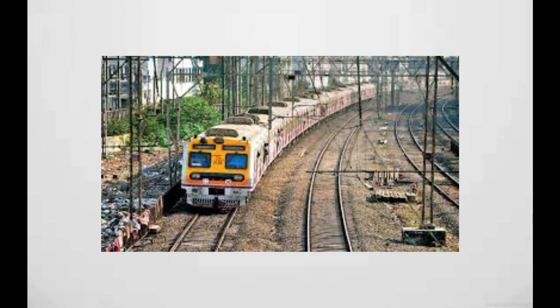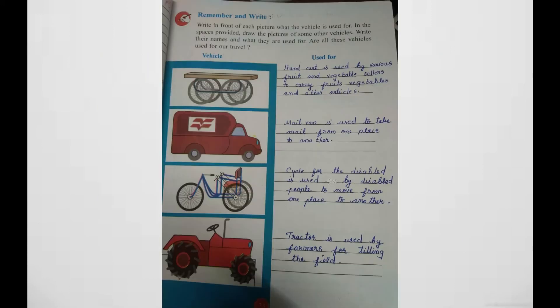Here, pictures are given and in front of each picture, write the vehicle used. First picture: handcart. A handcart is used by fruit and vegetable sellers to carry fruits, vegetables, and other articles. Next: mail van. A mail van is used to take mail from one place to another.